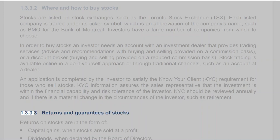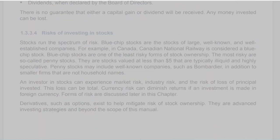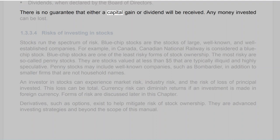Section 1.3.3.3: Returns and Guarantees of Stocks. Returns on stocks are in the form of capital gains when stocks are sold at a profit, and dividends when declared by the board of directors. There is no guarantee that either a capital gain or dividend will be received, and any money invested can be lost.